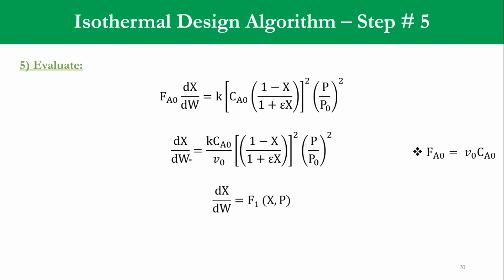So we can say that this dX/dW is a function of X and P, because k is constant term, CA0 is a constant term, v0 which is volumetric flow rate, again it is a constant term, this epsilon again it will be a constant term. So what are the variables in the system? Accordingly, X and P. So we said that this differential of X with respect to the differential of weight of catalyst is a function of conversion and pressure. And our next task related to it, which we will be covering in our next lecture, is to relate the pressure drop to the catalyst weight in order to determine conversion as a function of catalyst weight.